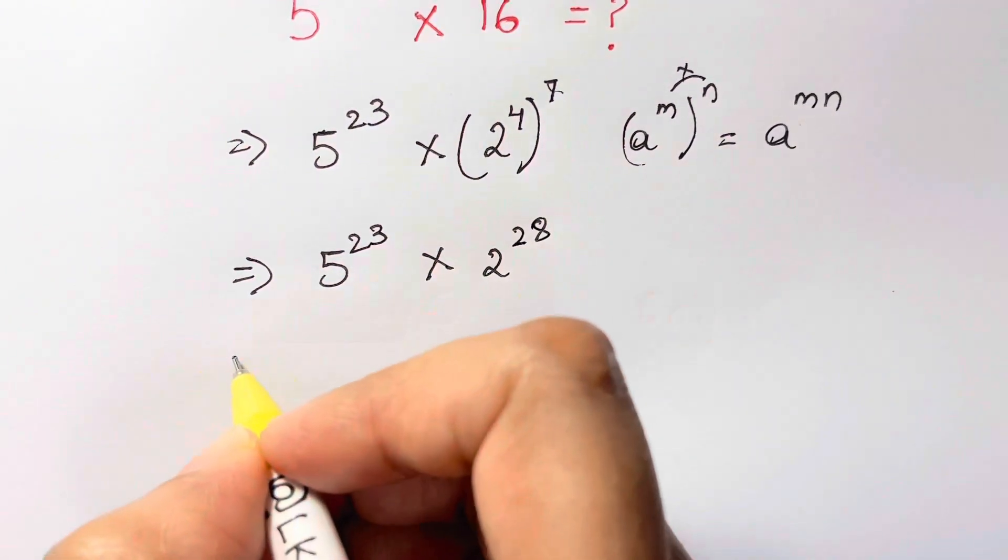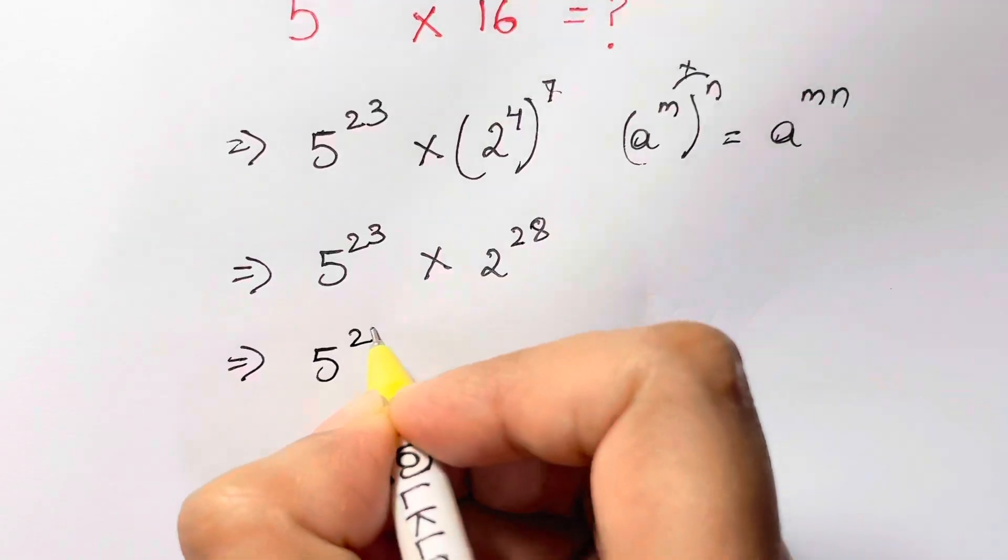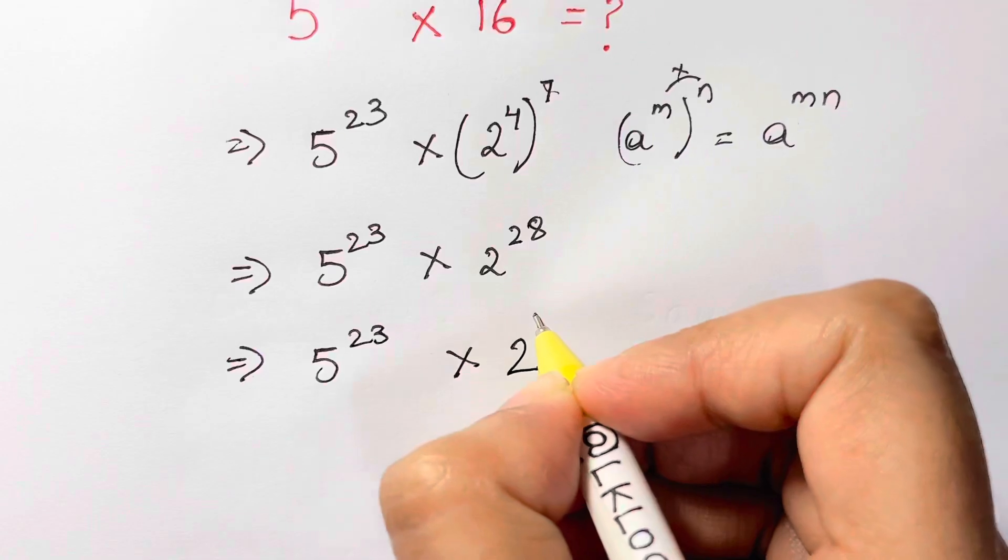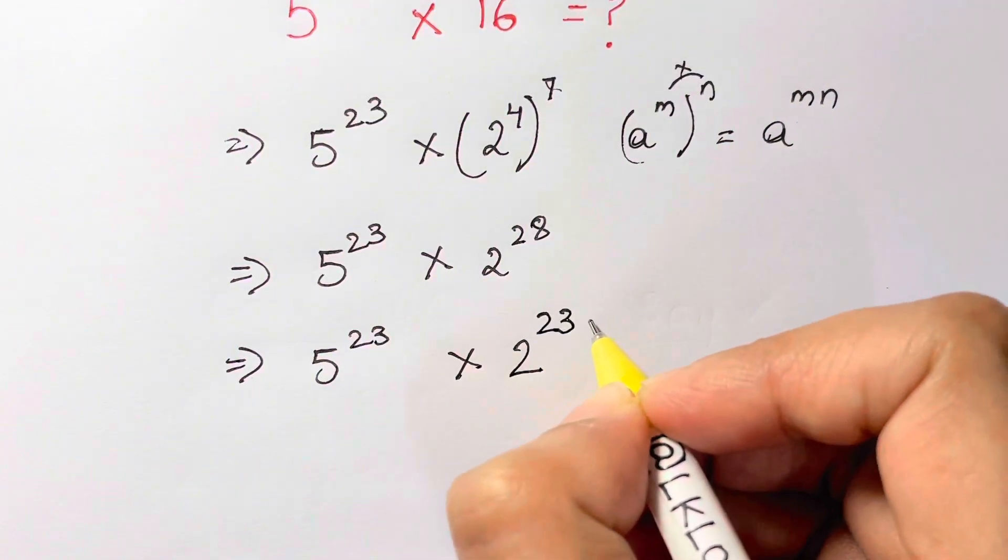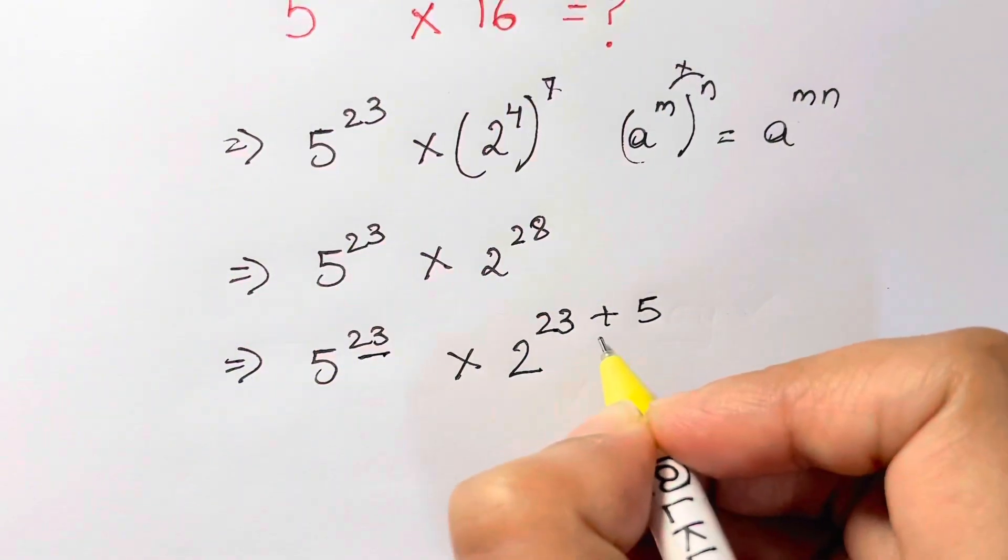Next step, we're going to split 28. So 5 to the 23 times 2 to the power of—now I'm going to split it as 23 plus 5. Why? Because I have an exponent of 23 here and also 23 here.